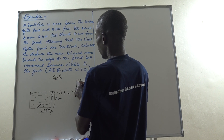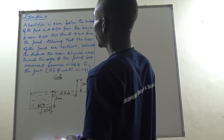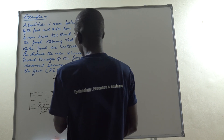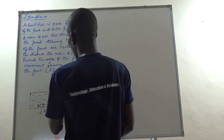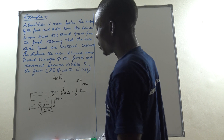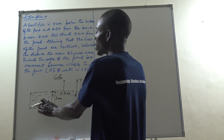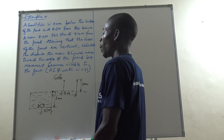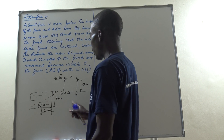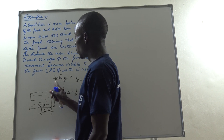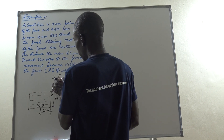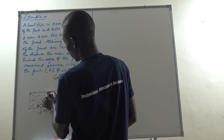They're asking us to calculate the distance the man should move towards the edge of the pond before his movement becomes visible to the fish. If he moves and comes to a certain point, the fish will automatically see him — he becomes visible. So he should move some distance x towards the edge before the fish can see him. Once he goes beyond that point, his head will come out above the critical line and the fish will be in a position to see him. So what is that distance x?